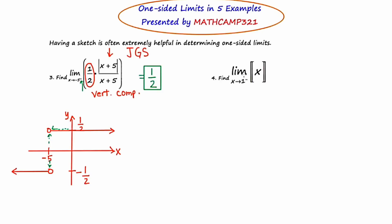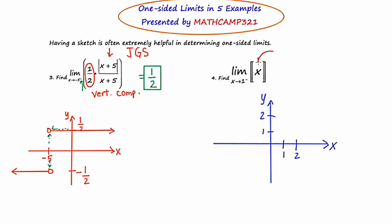Alright, example number four. This is the greatest integer function, also known as the step function. Our particular calculus book has a few homework problems that use this, but I don't know if I've ever seen it on an actual AP exam. So whatever value you put in, it's going to get sent to the integer to the left on a number line. So if we had the number 1.2, the greatest integer of 1.2 would be 1. So 1.2 goes to 1, and 1.9, 1.1 — everything is going to be 1 until you get to 2. The minute you get to 2, it's going to jump up to 2. So it's going to be a closed circle on the left side, but an open circle on the right side.